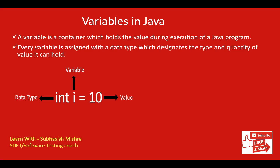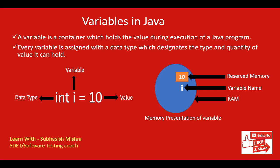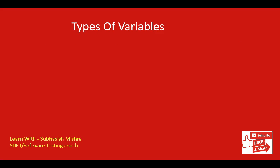We will cover data types in the next tutorial, so do not worry much about data types. Again, a variable is a name of a reserved area allocated in memory — in other words, it is the name of a memory location. Variable values can be changed. Here you can see the complete RAM, and we have a variable i with reserved memory holding the value 10.